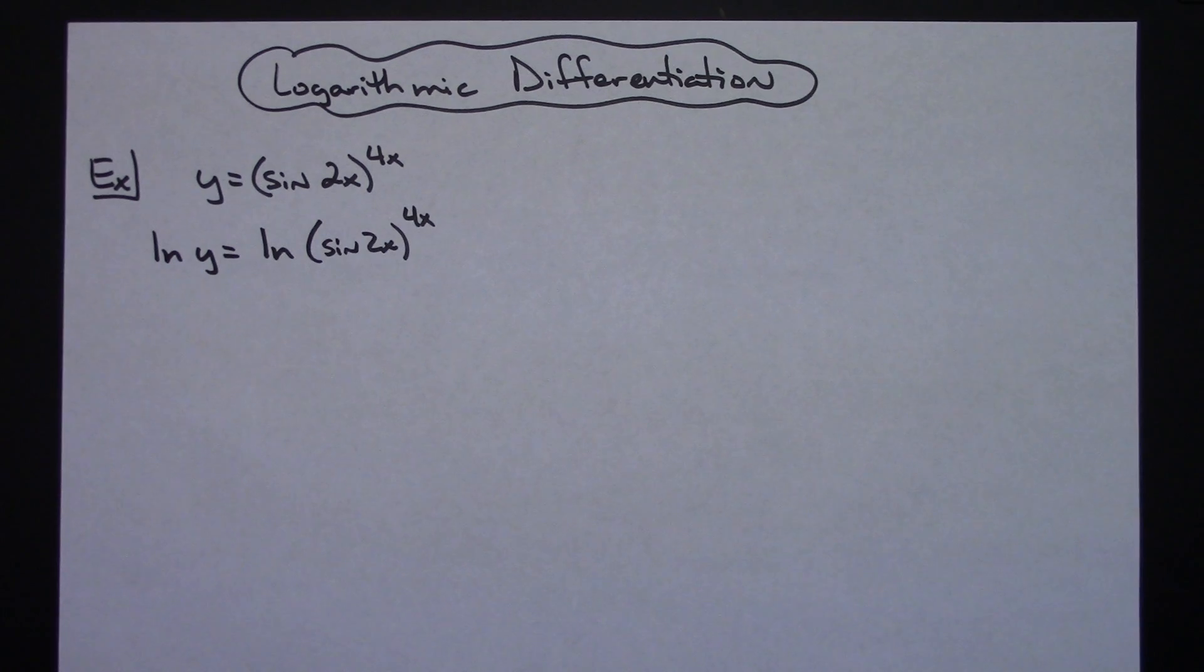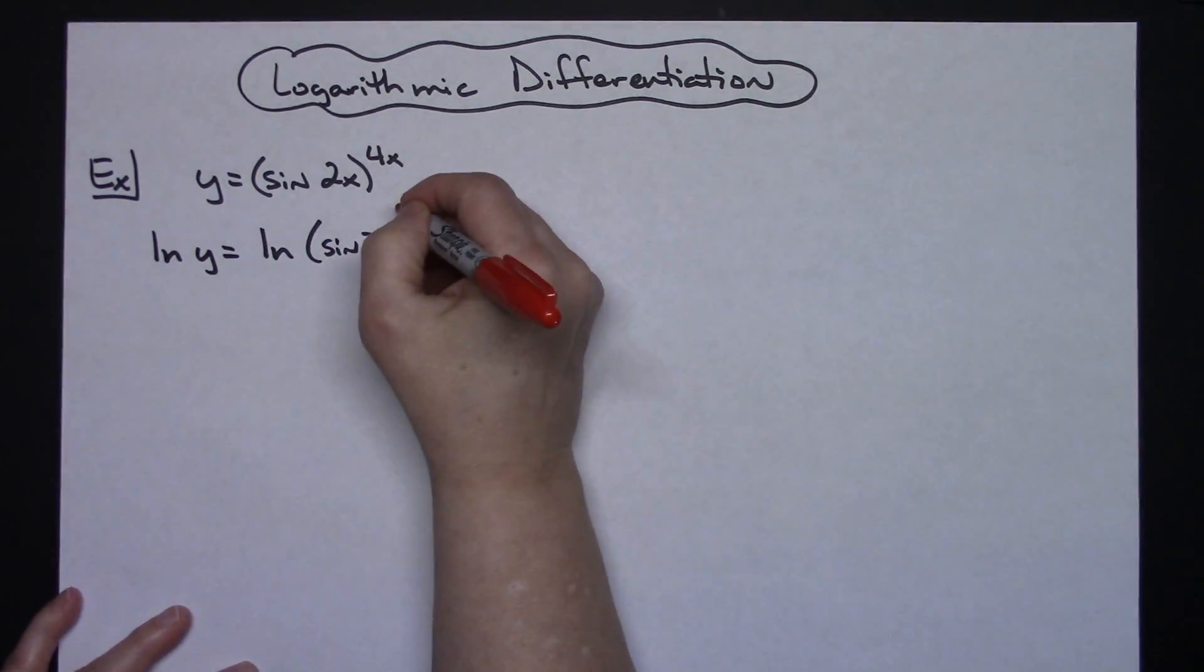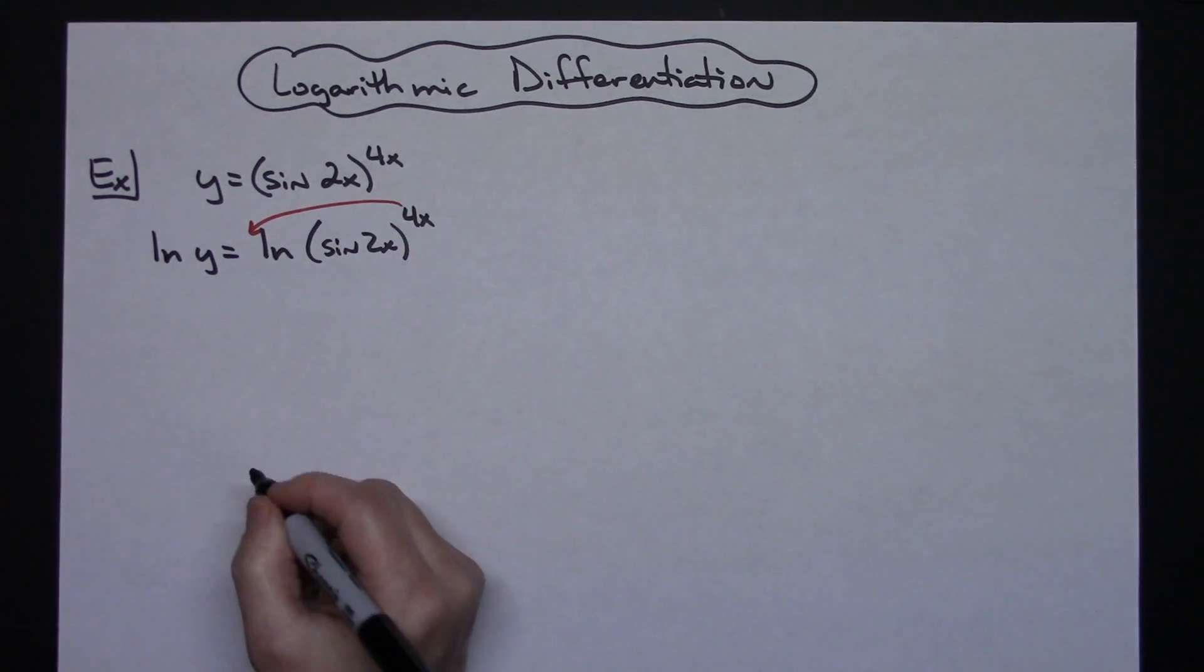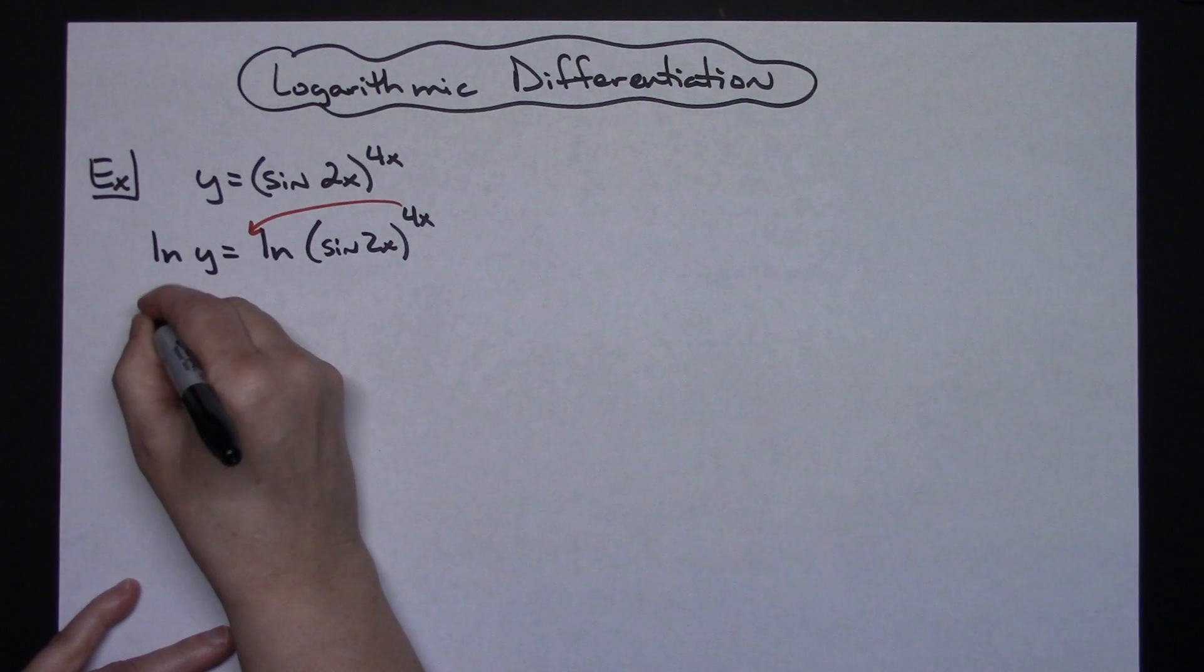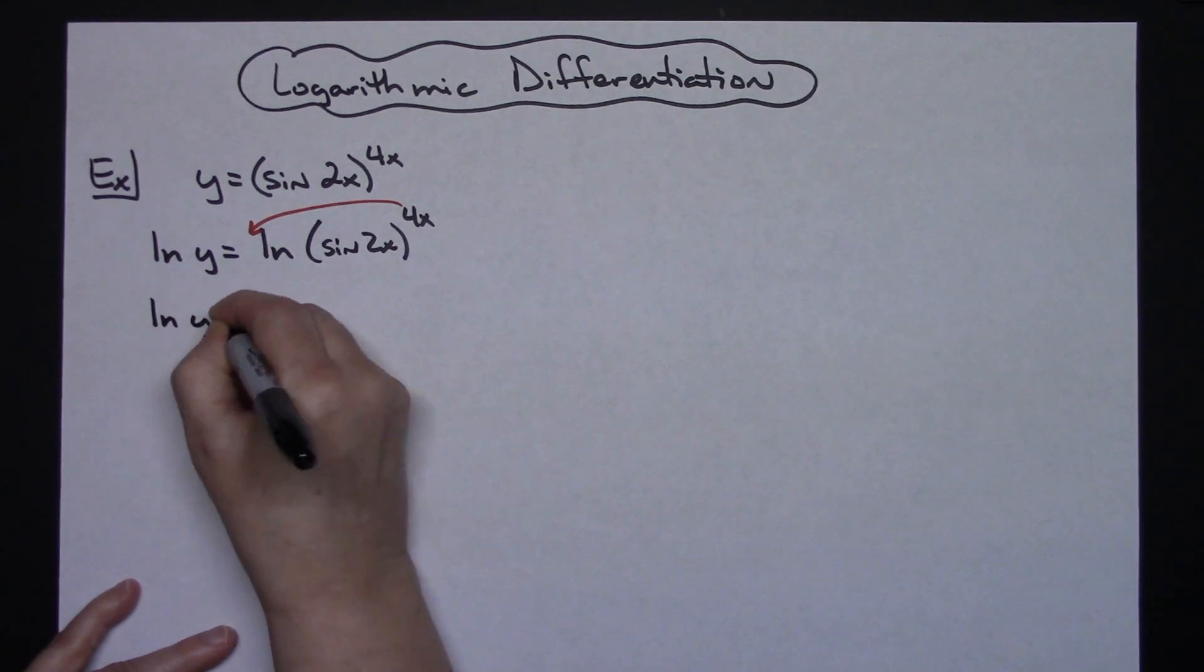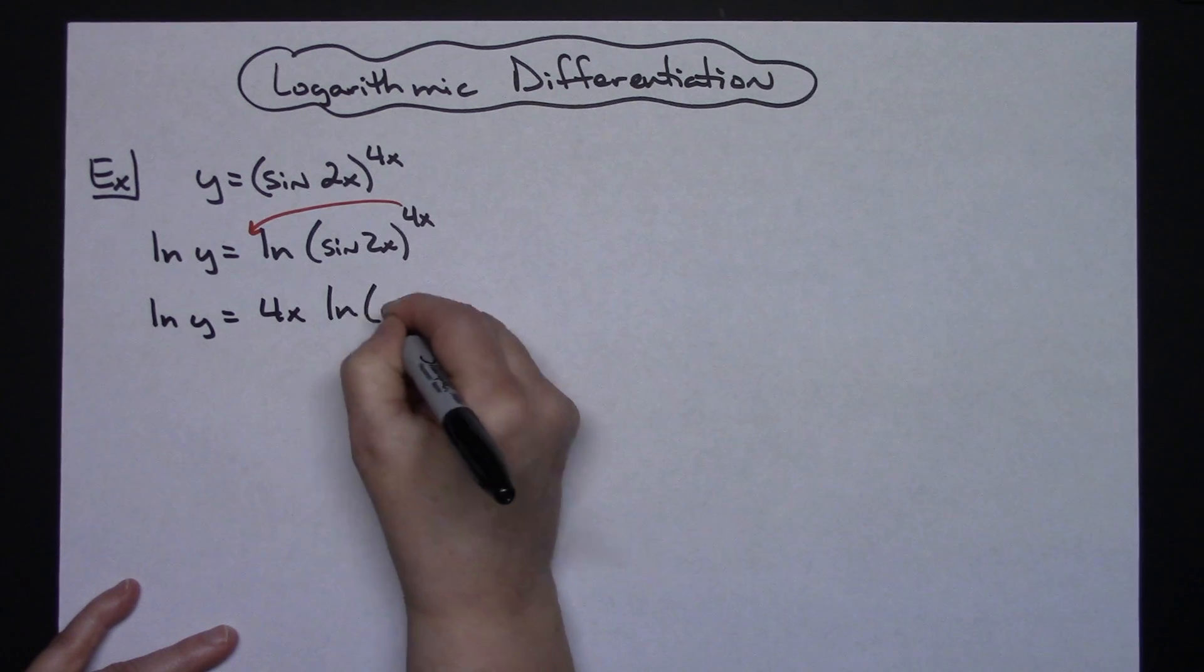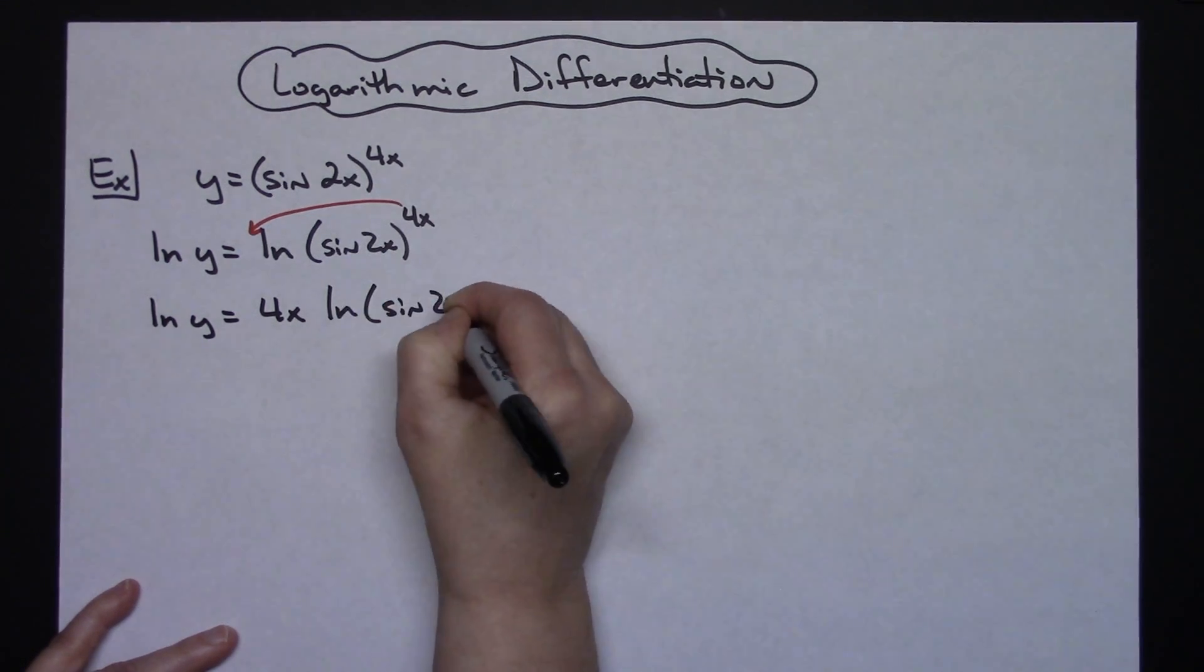Now you're going to want to apply log rules as much as you can to simplify the expression. In this one, the only thing I can do there is to bring that 4x down in front of my log. So I'll have natural log of y is equal to 4x times natural log of that sine 2x.